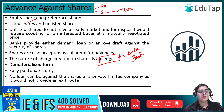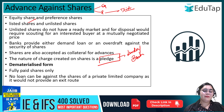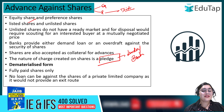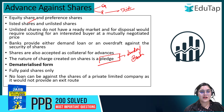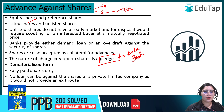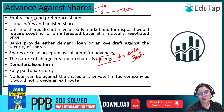Loans are not given against private limited company shares. This is because private limited companies have very limited shareholders — only a small number of members are allowed — making such shares very illiquid.